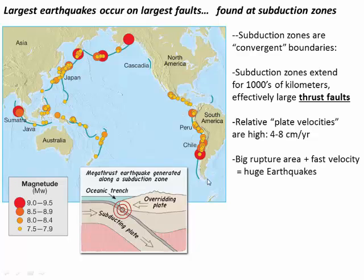Subduction zones are ripe for this. For one thing they are very extensive — we've already seen that subduction zones extend thousands of kilometers along the coast of South America and along the Aleutian Islands. They're basically incredibly long continuous thrust faults that also happen to be well lubricated by wet sediments going down the subduction zone. So once an earthquake starts it's going to be able to extend and keep going along a long distance of the fault.